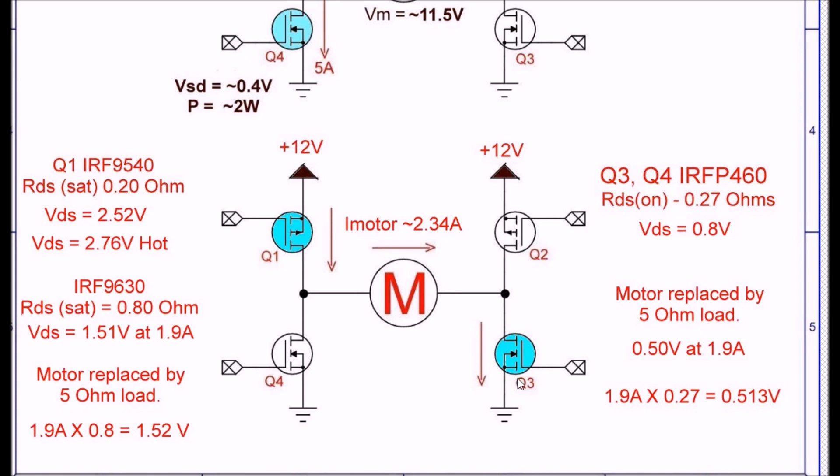On Q3, the N-channel, let's look at it this way. I calculated it theoretically: 0.27 ohms times 1.9 amps should give you about, 1.9 amps times 0.27, that's 0.513 volts. My actual measured voltage, as near as I could tell, was 0.5 volts. Bingo. Right on the money.